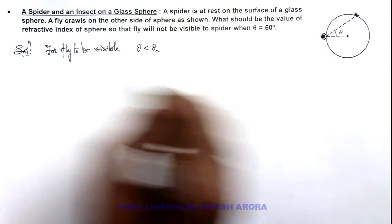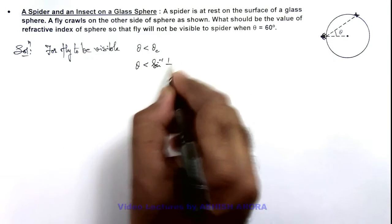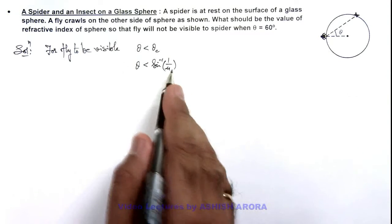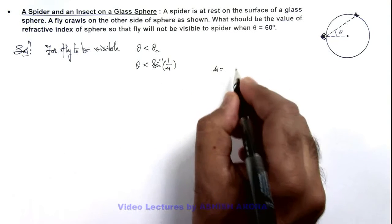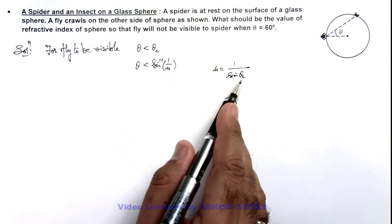So here theta must be less than theta_c, or we can write theta must be less than sine inverse of 1 by μ. And we know well that μ can be written as 1 by sine theta_c. That's why here, as theta_c is 60 degrees...